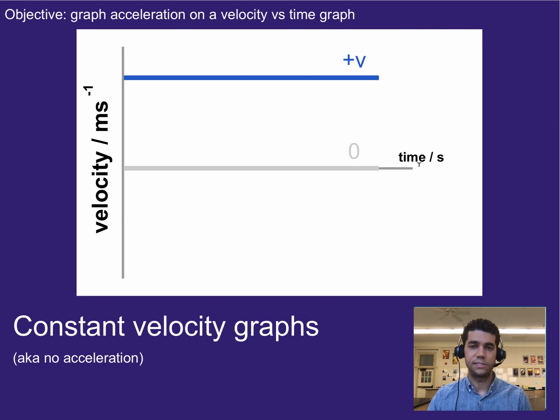And then for negative velocity, that would just mean the opposite direction. So if we called positive to the right, negative would just be to the left. If we called positive going up, the negative would just be going down, and we can flip that. It just depends on the situation and you define it each time.